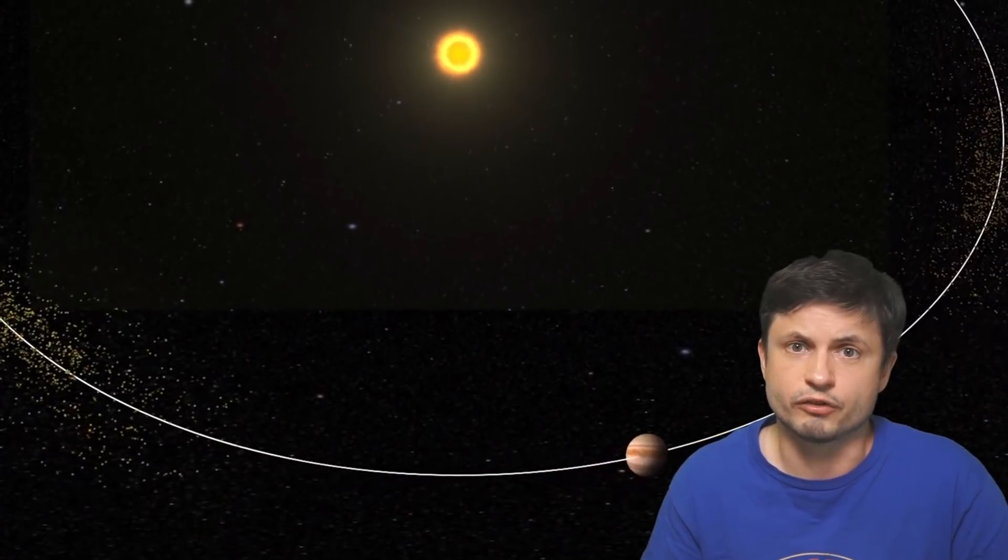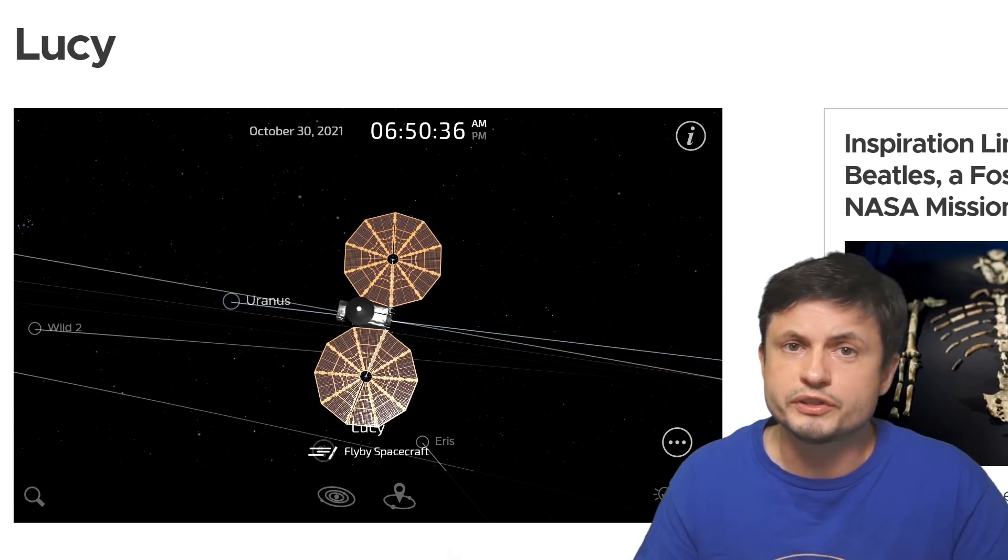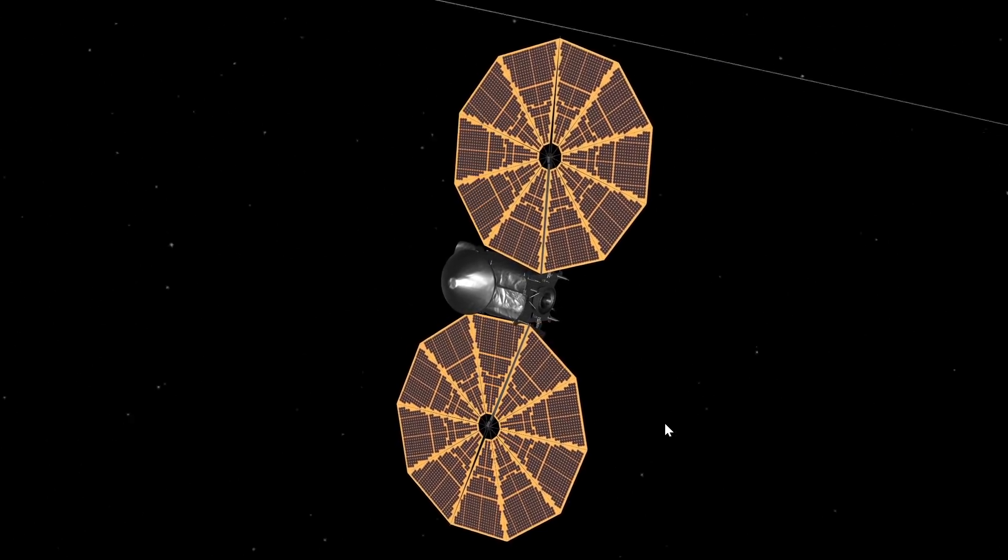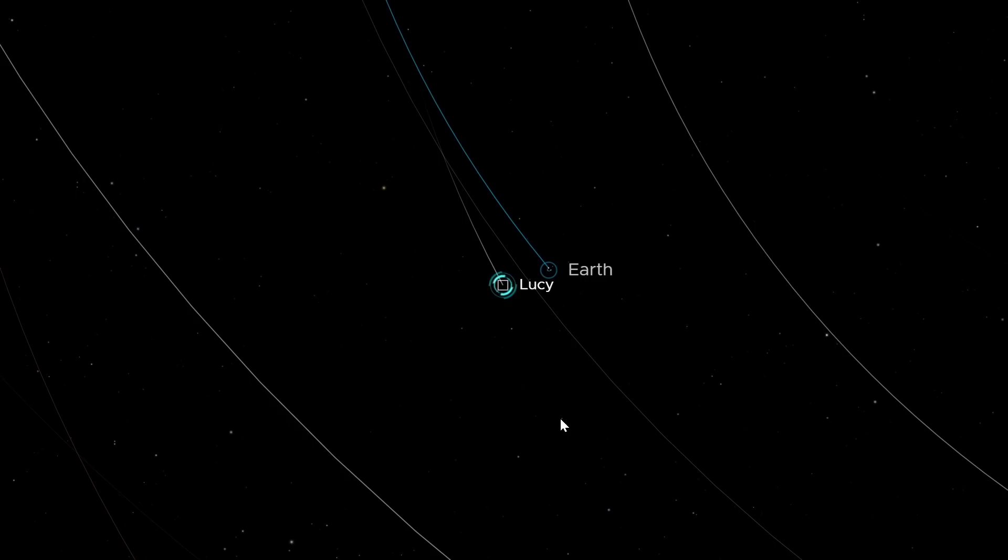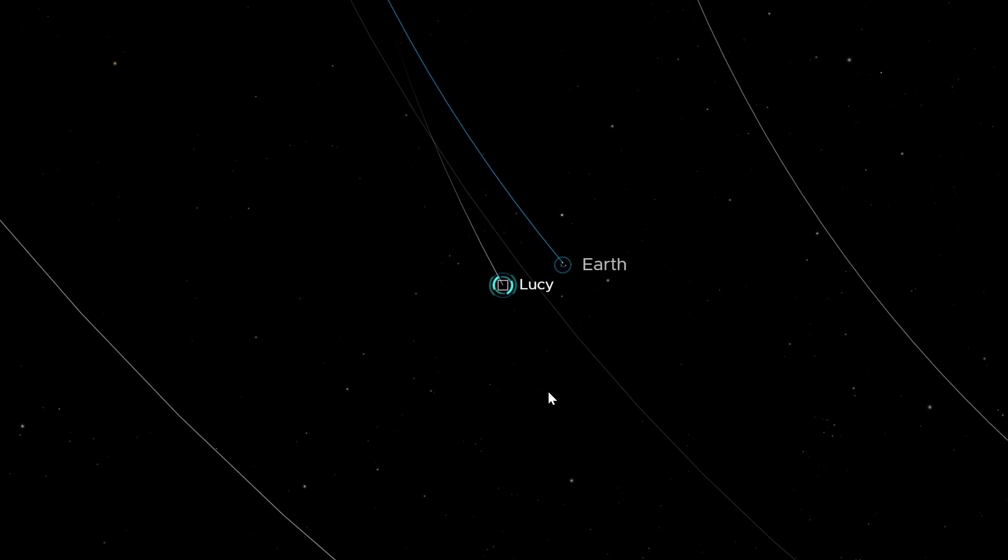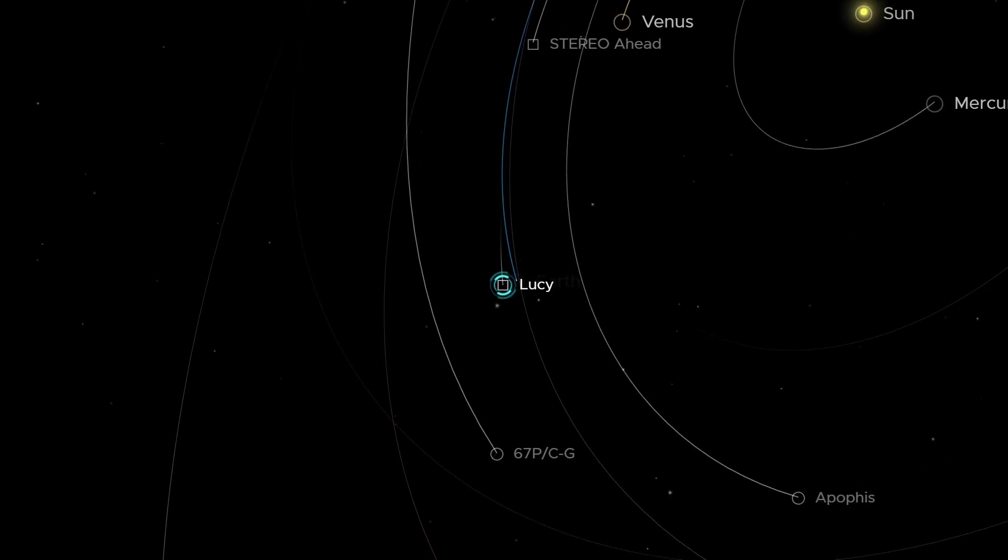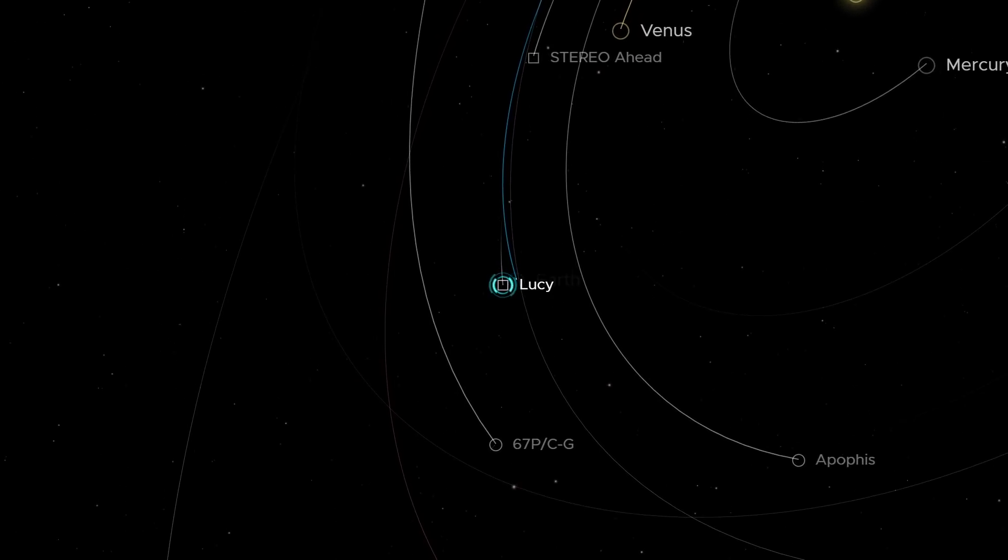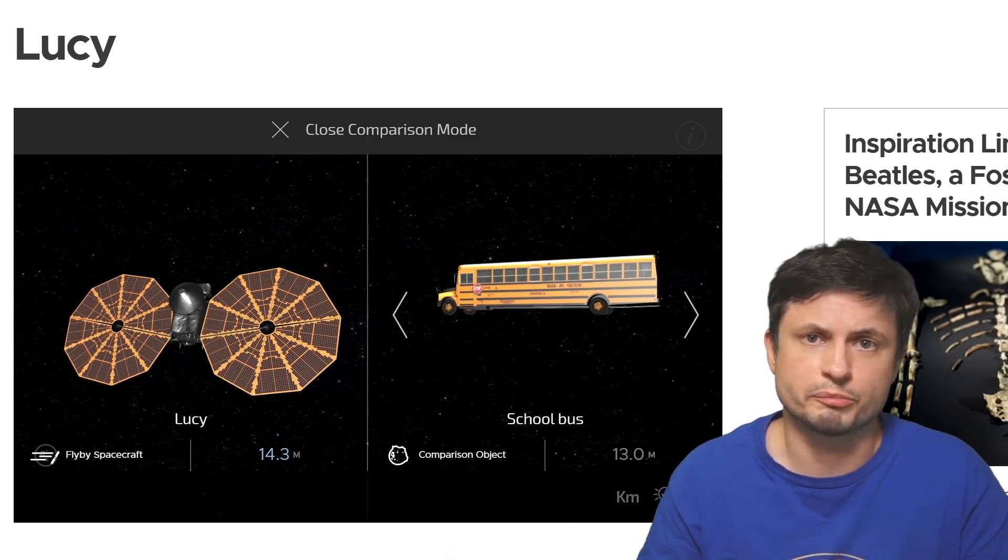And in case you're wondering where the probe is right now, and how far away it got from Earth already, you can find all of this information by clicking on the link in the description below, that essentially shows you Lucy's location in the solar system, which turns out to be already pretty far away, approximately 6 million kilometers away from Earth. And so here you can see that it's already moving farther and farther from Earth, and will eventually come back for that slingshot maneuver.